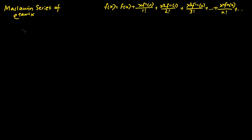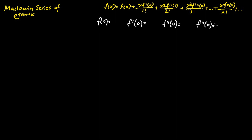The equation shown in the top right hand corner of this video tells us that a function of x can be expressed as an infinite series, in which we will need to evaluate the following before being able to find the Maclaurin series. f(0) is the function evaluated at x equals 0. f'(0) is the function differentiated once and evaluated at x equals 0. f''(0) is the function differentiated twice and evaluated at x equals 0. And f'''(0) is the function differentiated three times and evaluated at x equals 0.